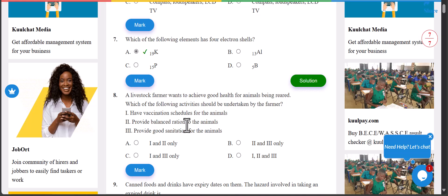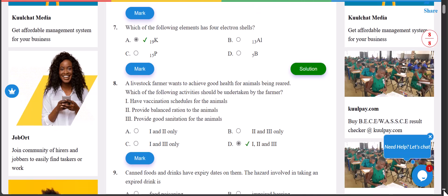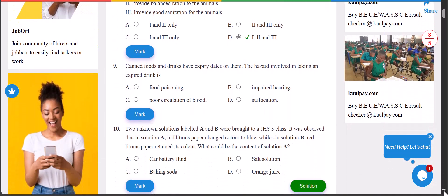Number eight: a livestock farmer wants to achieve good health for animals being reared. Which of the following activities should be undertaken? We have vaccination, provide balanced ration, and provide good sanitation. The answer is D - all the three.